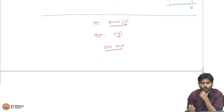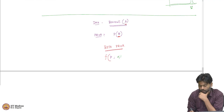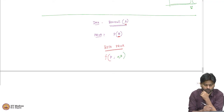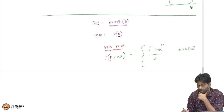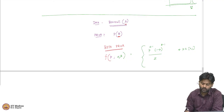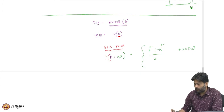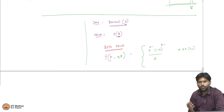The beta distribution is defined for every value of p between 0 and 1. Like the Gaussian is parameterized by mean and variance, the beta distribution is parameterized by two positive values, alpha and beta. Its density is proportional to p^(α-1) · (1-p)^(β-1) for all p in (0,1), divided by some normalizing constant Z such that it integrates to 1. The functional form — how it depends on p — is what matters most.